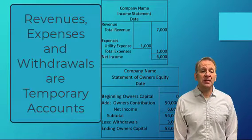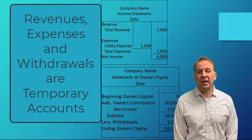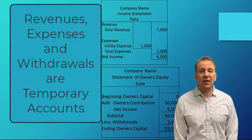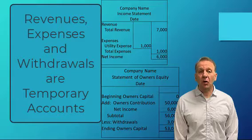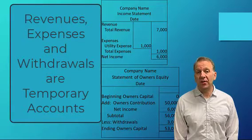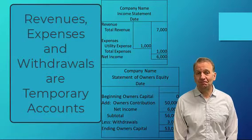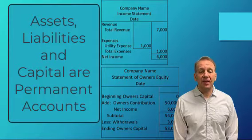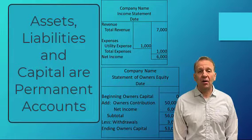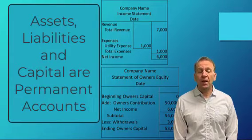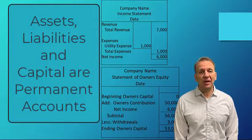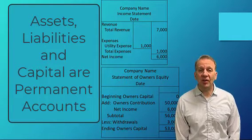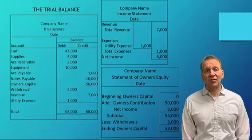The revenue, expenses, and withdrawal are temporary accounts. These accounts we need to zero out at the end of the year and start over again the new year with a zero balance. All the other accounts — assets, liabilities, and the capital account — are permanent accounts. Their balances roll over from year into the next year. The temporary accounts need to be zeroed out so that we can start over again at zero.